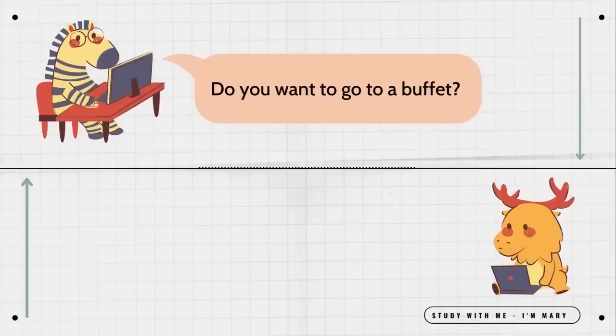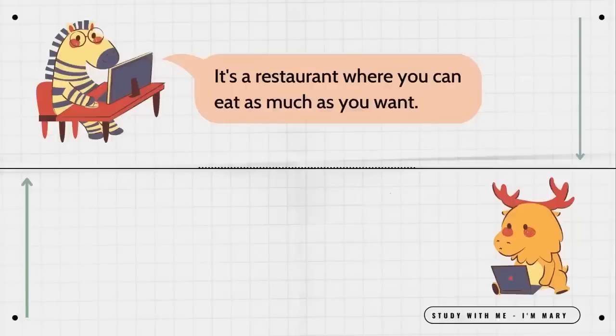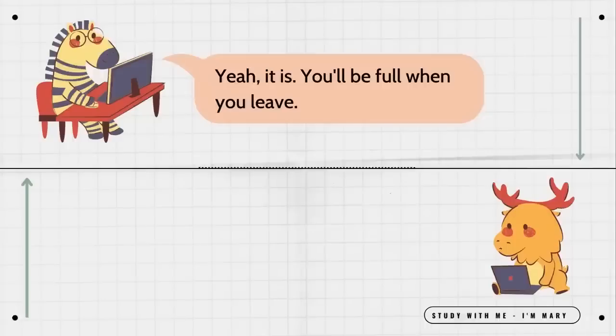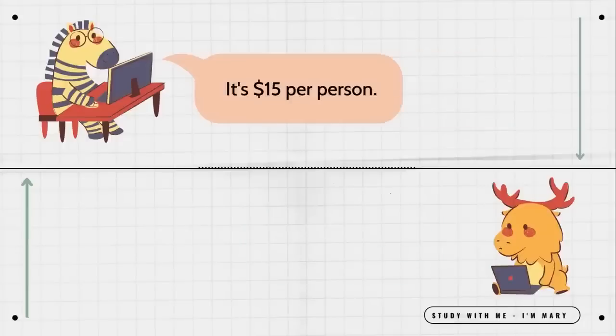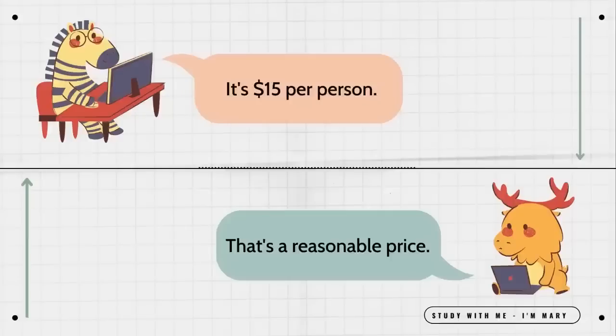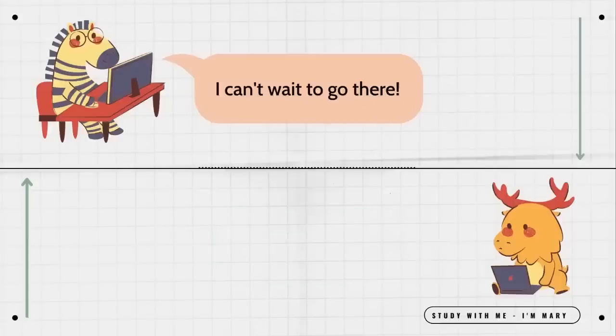Do you want to go to a buffet? What is a buffet? It's a restaurant where you can eat as much as you want. That sounds awesome. Yeah, it is. You'll be full when you leave. What kind of food is there? There's sushi, noodles, dumplings, and a whole lot more. How much is it? It's $15 per person. That's a reasonable price. I can't wait to go there.